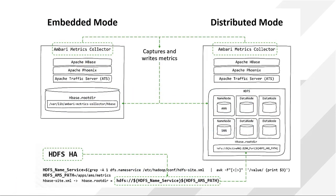The Metrics Collector is built using Hadoop technologies such as Apache HBase, Apache Phoenix, and Apache Traffic Server. By default, the collector runs in embedded mode and stores metrics data on the local file system on the host where the collector is running. Additionally, we can configure the collector to run in distributed mode.